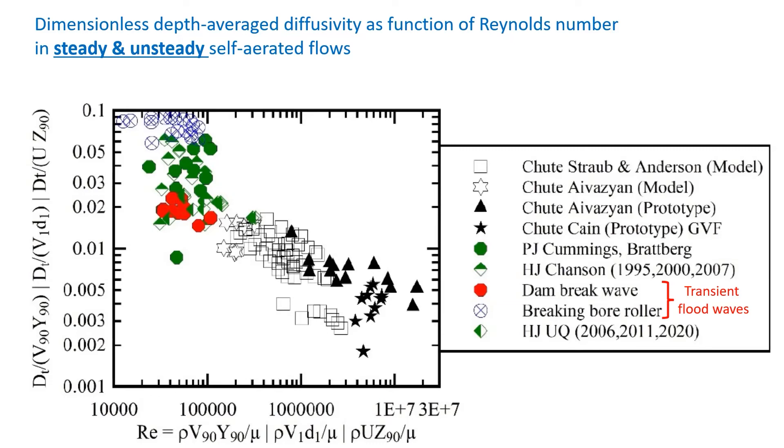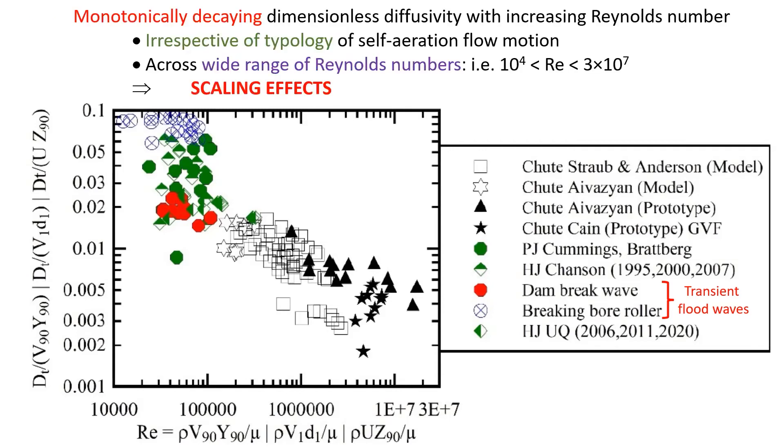One of the key observations of this combined data set covering more than three orders of magnitude in terms of Reynolds number is that we see a monotonically decaying diffusivity with increasing Reynolds number, irrespective of the typology of the self-aerated motion.